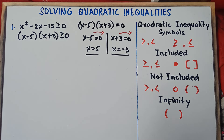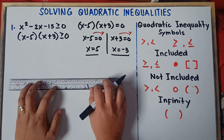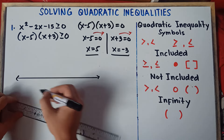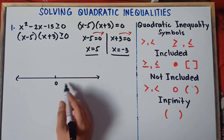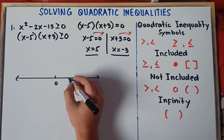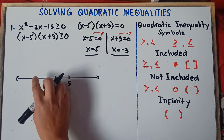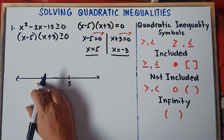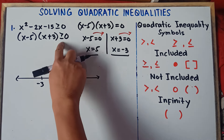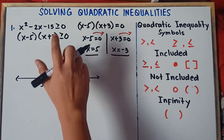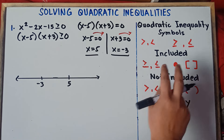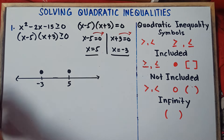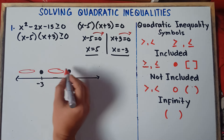Once you get your critical points, locate them on the number line. Positive 5 will be on the right, and negative 3 will be on the left. Since we have greater than or equal, we use a closed circle on top of negative 3 and another closed circle on top of positive 5. Then we will be checking three regions: the region to the left of negative 3, the middle region, and the region to the right of positive 5.